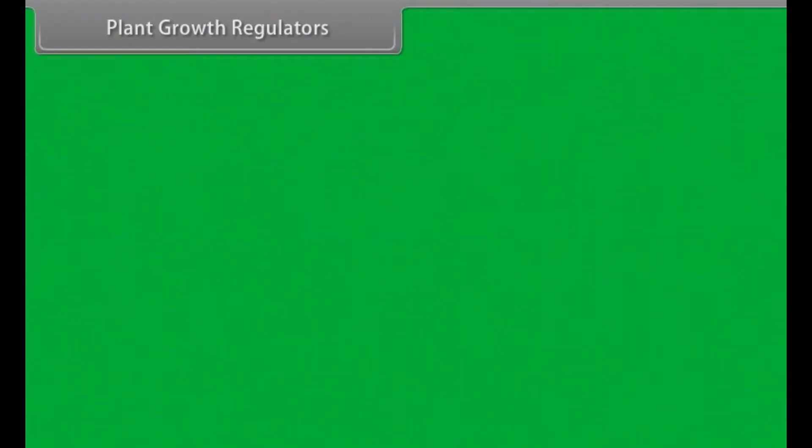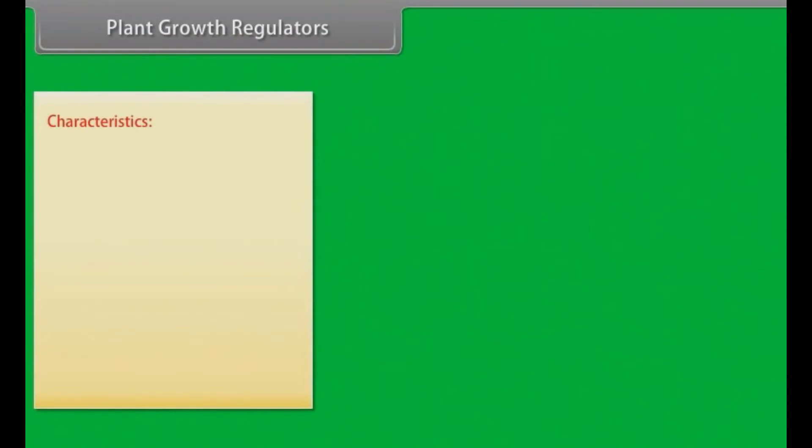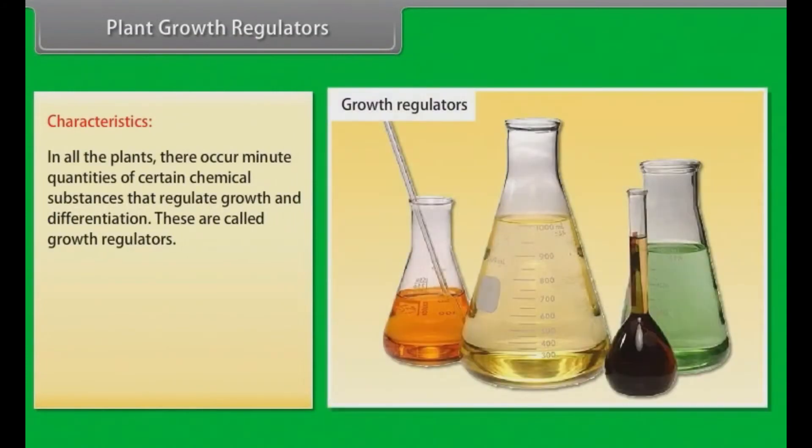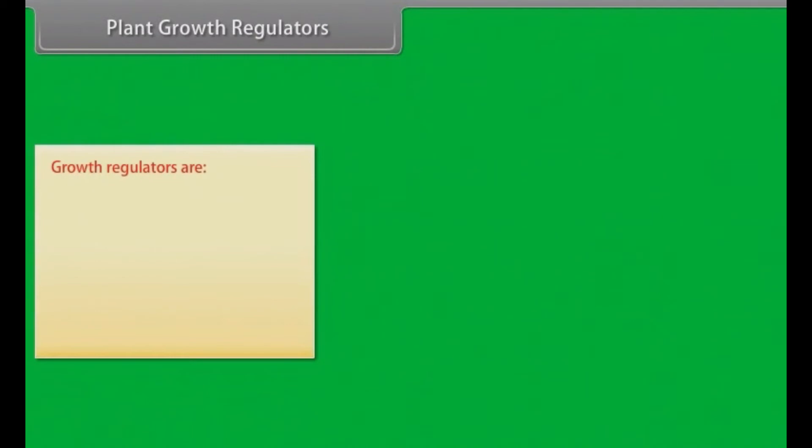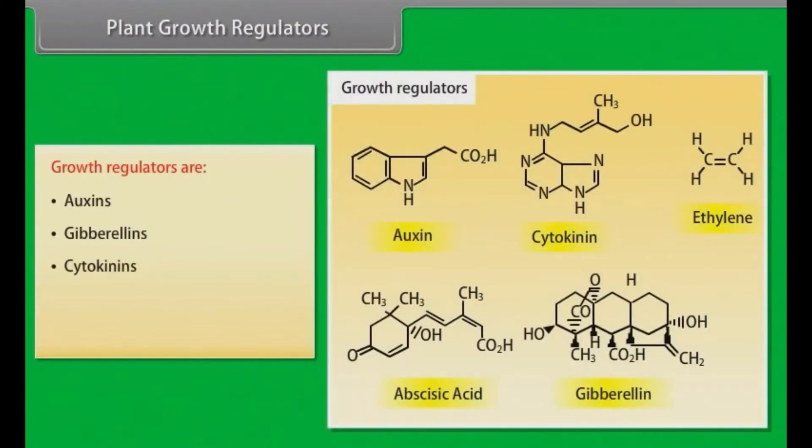Plant Growth Regulators. Characteristics: In all the plants, there occurs minute quantities of certain chemical substances that regulate growth and differentiation. These are called growth regulators. A growth regulator may be defined as an organic substance produced naturally in plants controlling growth and other functions at a site remote from its place of production in minute quantities. These are auxins, gibberellins, cytokinins, ethylene and abscisic acid.